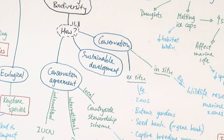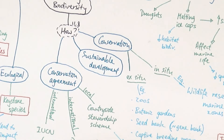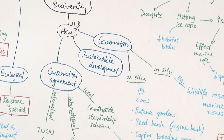Sustainable development refers to methods or policies that supply enough resources for current demands while ensuring future supplies for the next generations. One example is sustainable fishing: catching fish while leaving the younger fish, putting them back into the sea so they can mature, lay their own eggs, and ensure fish are available for future generations. This will be explored further in chapter 24 in A2.